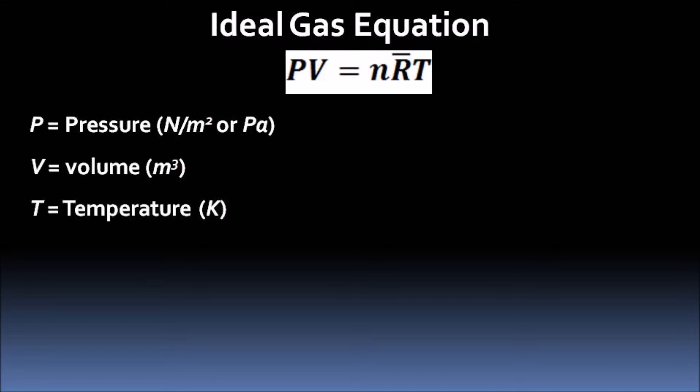Where P is the pressure of gas in Newton per meter squared or Pascal, V is the volume of gas in meter cubed, and T is the temperature of gas in Kelvin.